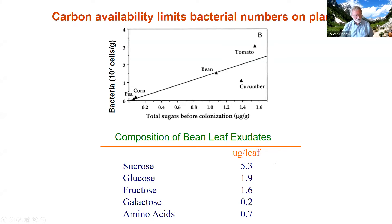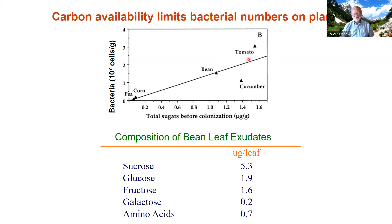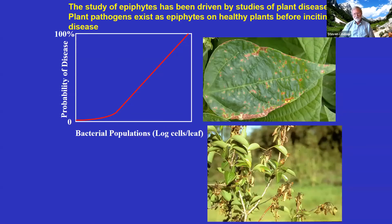Plants vary in how many microbes they have, driven by how many nutrients leak onto their surface. The leaf is full of sugars — sucrose, glucose, organic acids — which leak out onto the surface where microbes can eat them. Some plants like tomatoes and beans have a lot more nutrients leaking to the surface than corn and peas, which have a thick waxy surface. The more there is to eat, the more microbes you'll tend to find there.